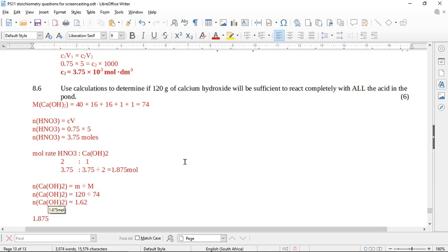And then from what we knew of the nitric acid, we needed 1.875. So 1.875 is greater than 1.62. So there is not sufficient calcium hydroxide to neutralize the acid. So there we go, we are finished another question here.